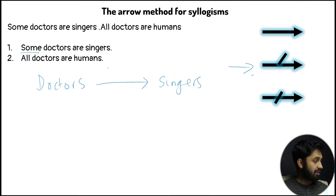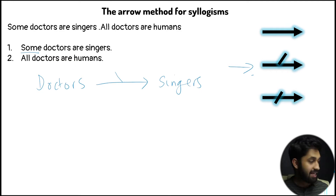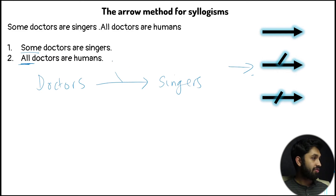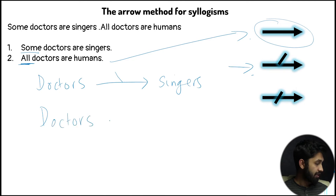Because it says 'some', that means 50%, so I'm going to draw the line coming out of it. For the second statement — 'all the doctors are humans' — the keyword is 'all', so we draw the 100% arrow. We write doctors, then arrow, then humans.